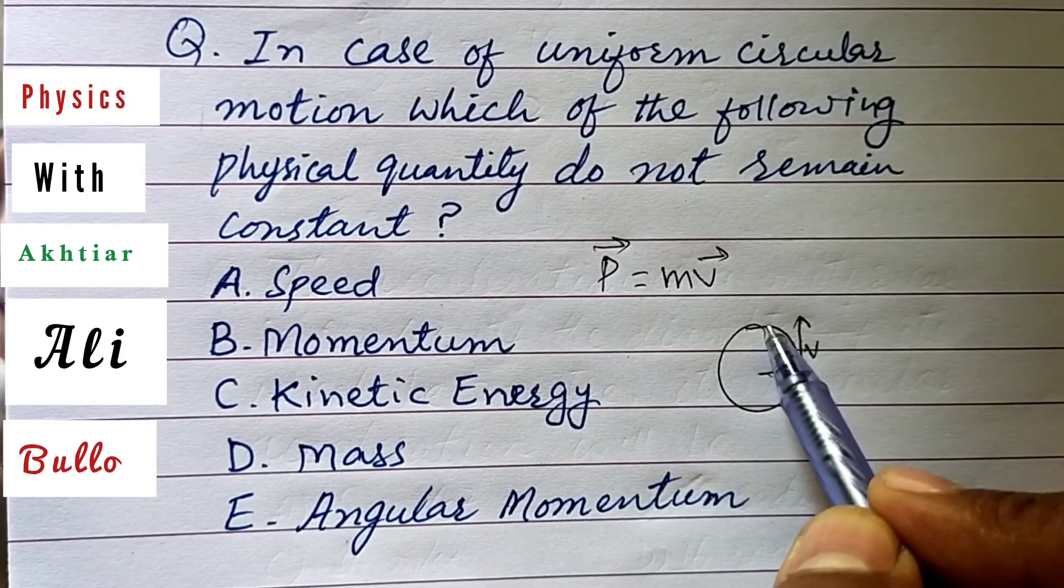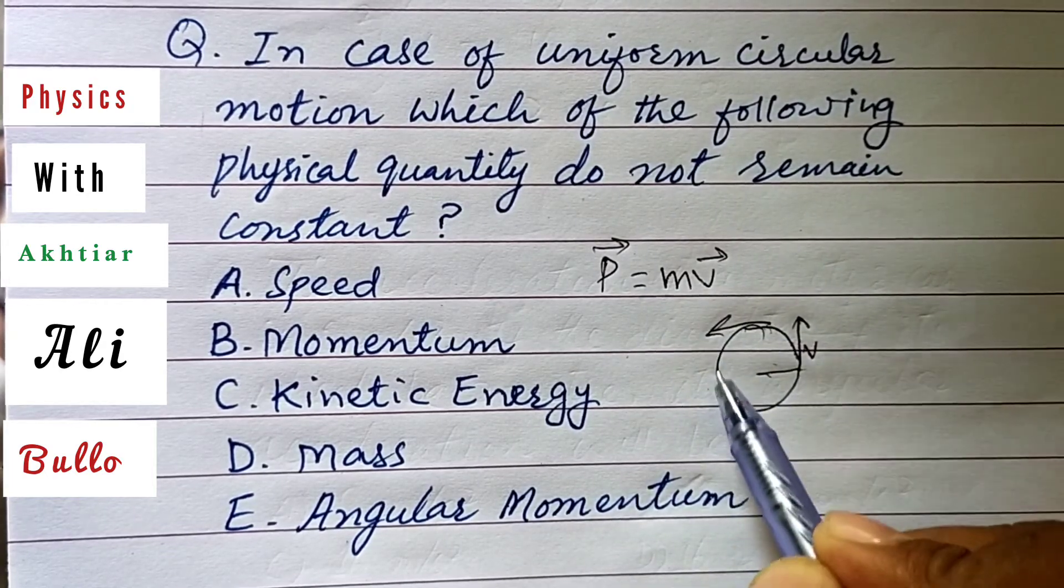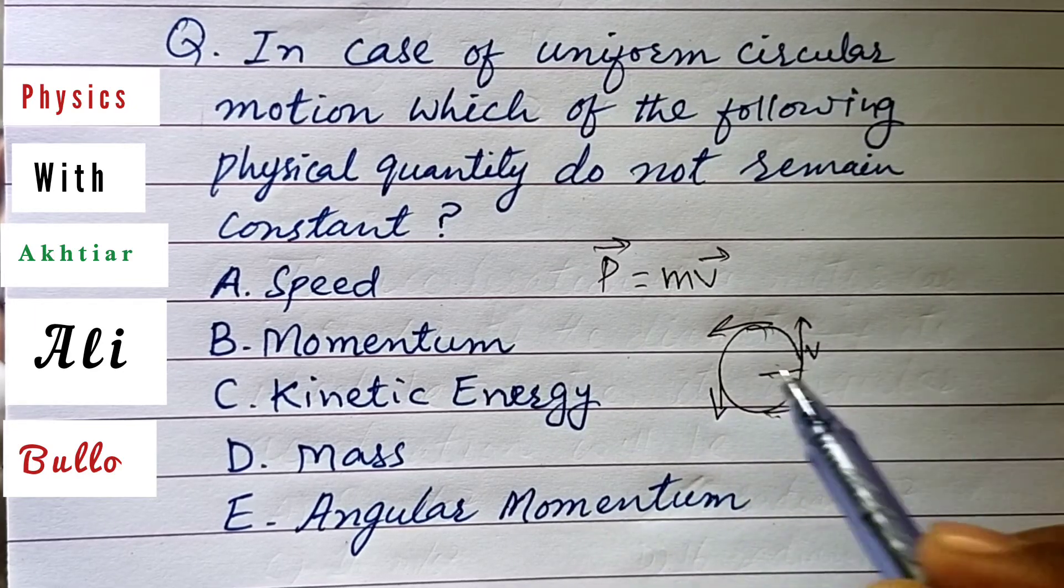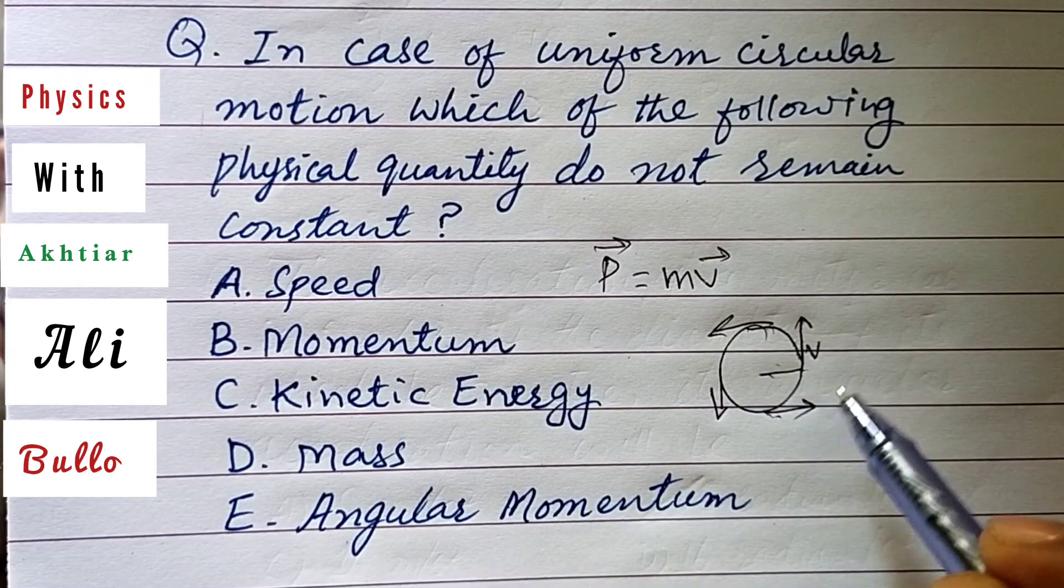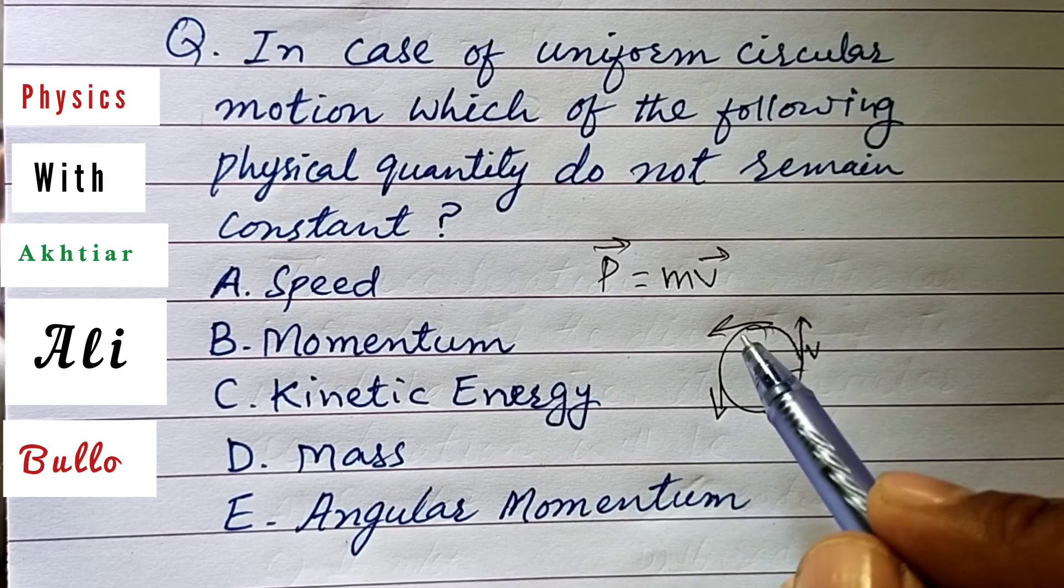line. At every point, the direction of the tangent line changes. That's why the velocity of a body changes at every